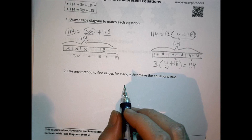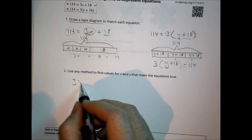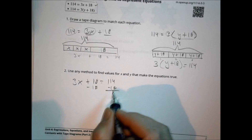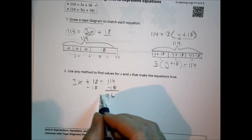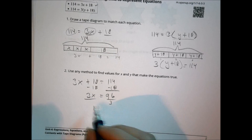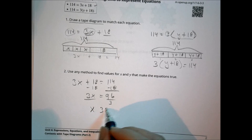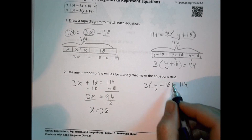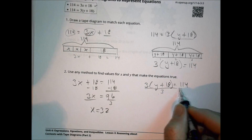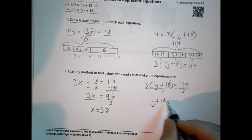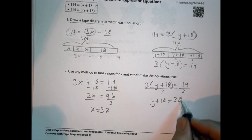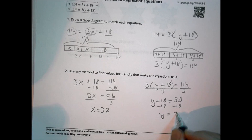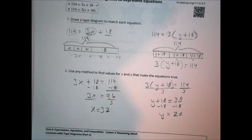Now solve each equation. For 3x plus 18 equals 114: subtract 18 to get 96 equals 3x, then divide both sides by 3, so x equals 32. For 3 times the quantity y plus 18 equals 114: first divide both sides by 3 to get y plus 18 equals 38, since 114 divided by 3 is 38, then subtract 18 to get y equals 20.